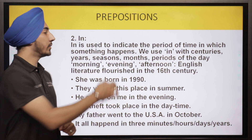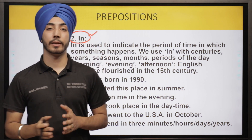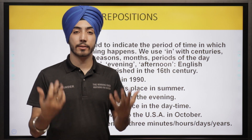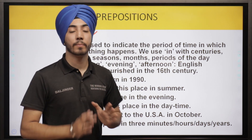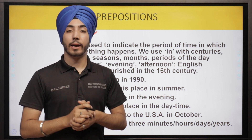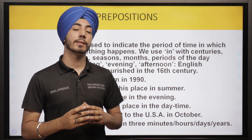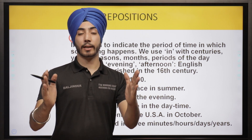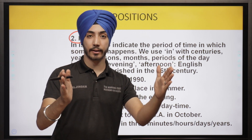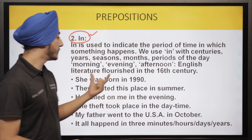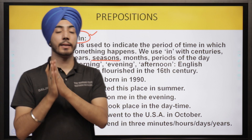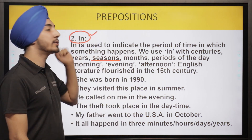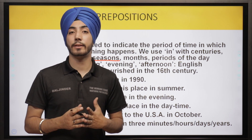The next preposition is 'in.' We use 'in' in our common language whenever we talk or write in English — it is perhaps the most common preposition. Now 'at' is used for a specific time event, but 'in' is used for a period of time — it starts from one point and extends to another. For example, a season has a beginning and an ending spanning some months. If something happens during that time period, we use 'in.'